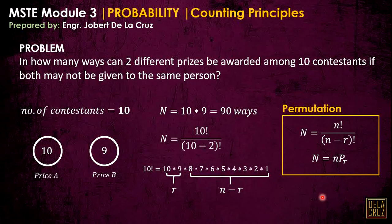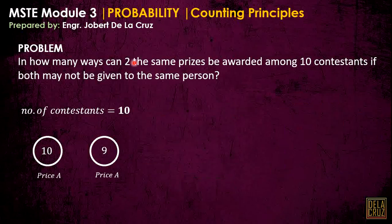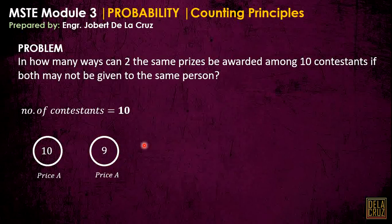Now, take note: the previous problem had two different prizes. What if we change it to two identical prizes? The problem becomes: in how many ways can two identical prizes be awarded? Since they are the same prizes, both will be called Prize A. Initially we still have ten probable contestants who can win the first Prize A, then nine possible contestants for the second Prize A.